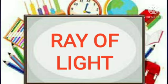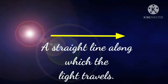R-A-Y ray. O-F of L-I-G-H-D light. Ray of light. Light rays always travels in a straight line. A straight line along which the light travels is known as ray of light.